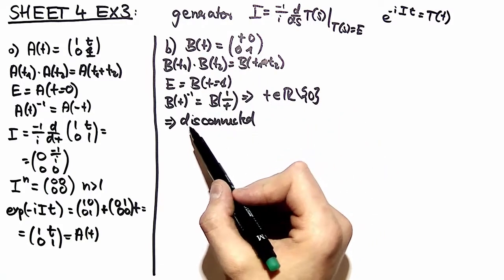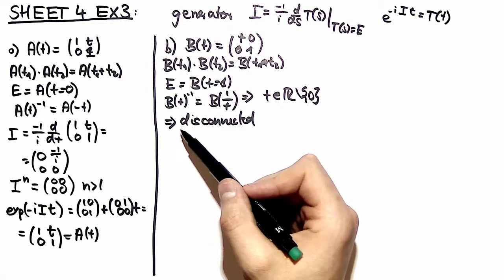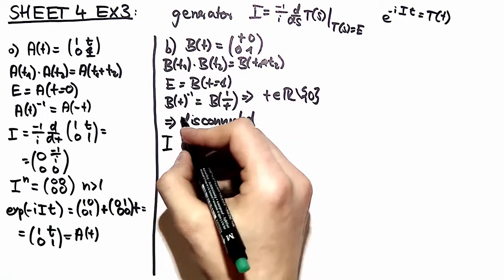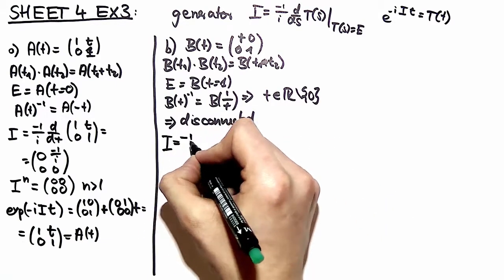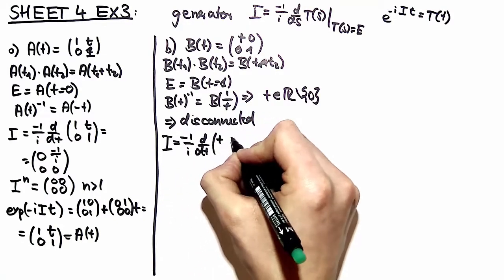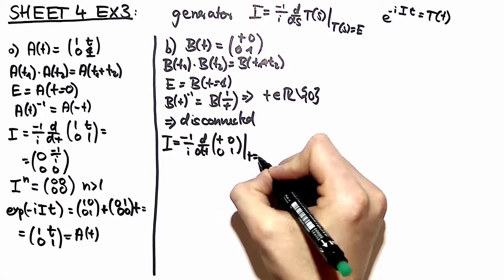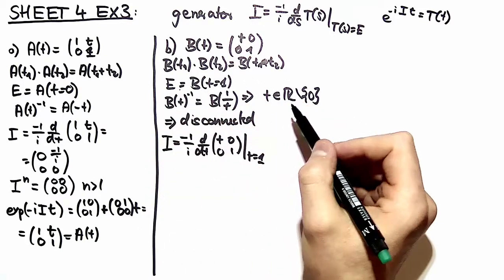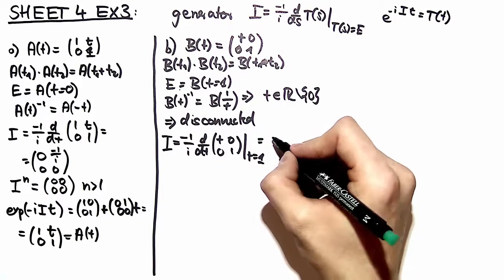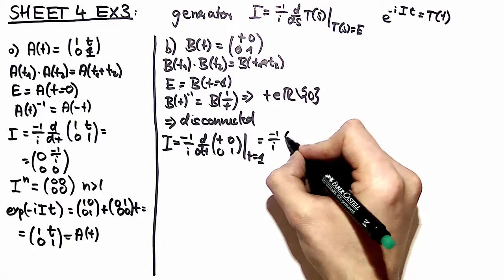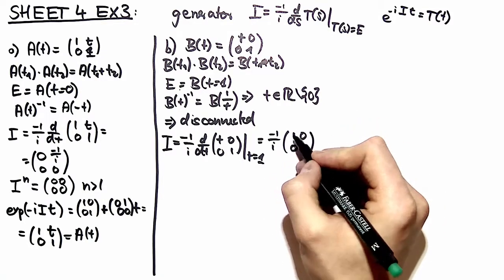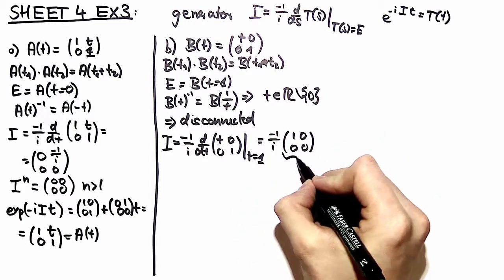So we have a disconnected group and therefore we have to be careful constructing the generators. But we take a straightforward approach and see what happens. So we take minus 1 over i d by dt of our matrix representation where t is equal to 1 because 1 yields the identity element. So what is this? Well this is the matrix where 1 is on the upper left corner and we have a prefactor and we call this j.